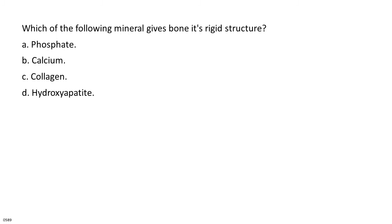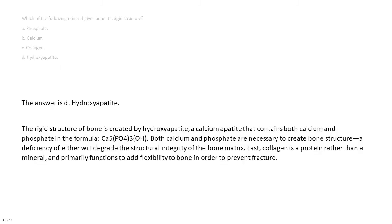Which of the following minerals gives bone its rigid structure? A. Phosphate. B. Calcium. C. Collagen. D. Hydroxyapatite. The answer is D, hydroxyapatite. The rigid structure of bone is created by hydroxyapatite, a calcium apatite that contains both calcium and phosphate in the formula Ca5(PO4)3(OH). Both calcium and phosphate are necessary to create bone structure; a deficiency of either will degrade the structural integrity of the bone matrix. Collagen is a protein rather than a mineral, and primarily functions to add flexibility to bone in order to prevent fracture.